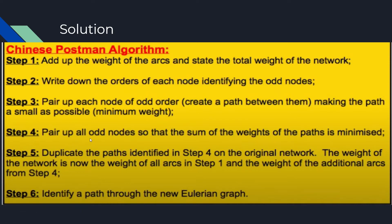Step four is to pair up all the odd nodes so that the sum of the weights of the paths that we created in step three is minimized. So, we'll get into that in future examples to make it more clear. Step five, once we've found the minimum sum of the weights of the paths, we can duplicate the paths identified in step four onto the original network. The weight of the network is now the weight of all arcs in step one and the weight of the additional arcs found in step four.